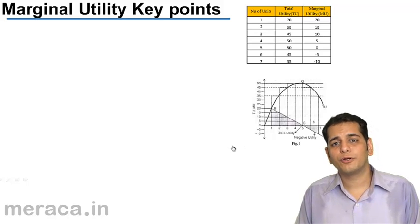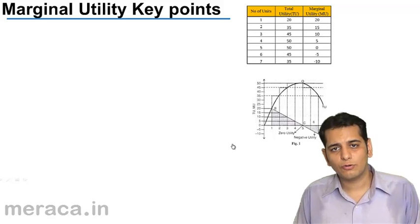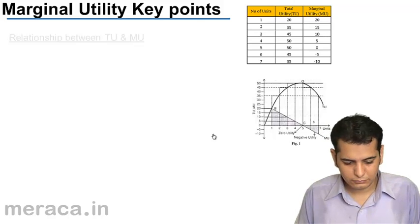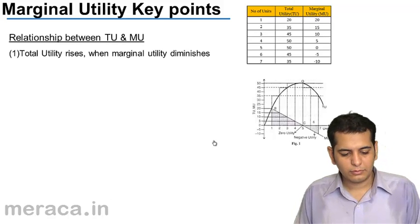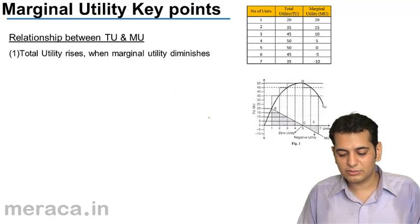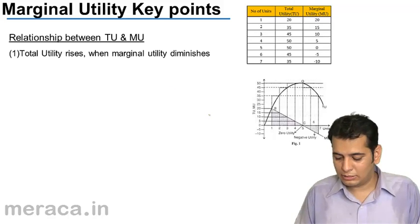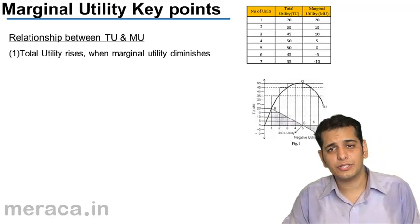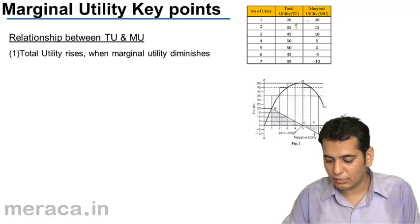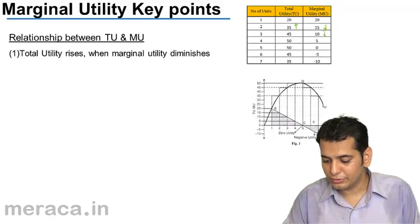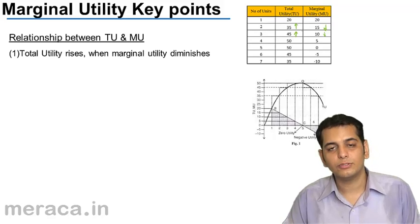Let's look at the key points under the law of diminishing marginal utility. First, total utility rises when the marginal utility diminishes. If we take a close look at the schedule, we can see that the total utility is rising when the marginal utility is falling.